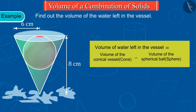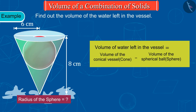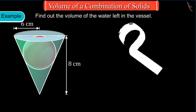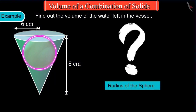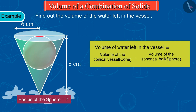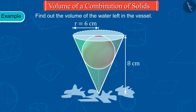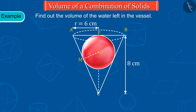Now we have to find out the volume of the cone and the sphere. From the figure, the values of the radius and height of the cone are known to us, but the value of the radius of the sphere is not known to us, which we have to find out. Let the radius of the sphere be s. Let's draw a figure for the given situation in which we represent the cone by a triangle and the sphere by a circle.